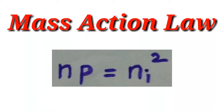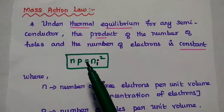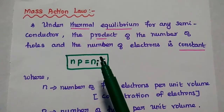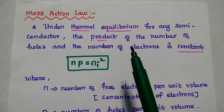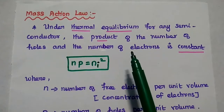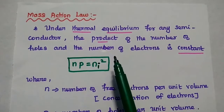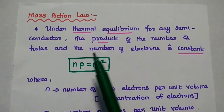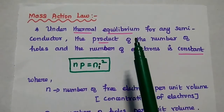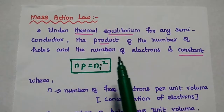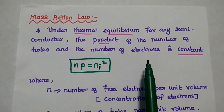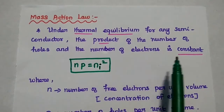Dear students, now we are going to discuss mass action law in detail. Let's start with the statement of mass action law. It states that for any semiconductor under thermal equilibrium condition, the product of the number of holes and the number of electrons is always constant.